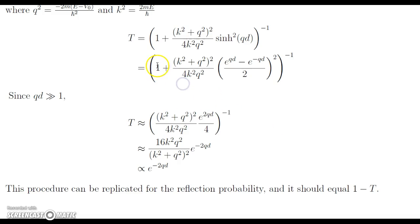Essentially, adding 1 is not going to do much because qd is so large, so we can just take this 1 out. Then here we're left with k squared plus q squared quantity squared times e to the 2qd, all over 4k squared q squared times 4. We can bring this 4 over, and then we flip because we have the inverse here. Then we're left with T is approximately 16k squared q squared over k squared plus q squared quantity squared, times e to the negative 2qd. This is what we wanted to show, that the transmission or tunneling coefficient was proportional to. Since we see that we have some value coefficient scaling it, we see that it is proportional to this as desired.